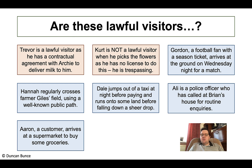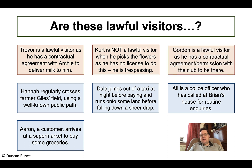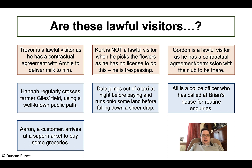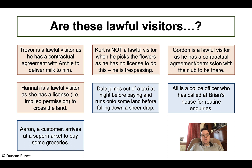Gordon, a football fan with a season ticket, arrives at the ground on Wednesday night for a match — clearly a lawful visitor, with permission evidenced by his season ticket. Hannah regularly crosses Farmer Giles' field using a well-known public path — again a lawful visitor, with implied licence to cross the land via that public path.